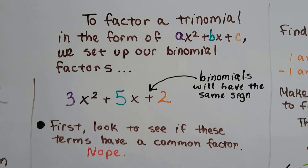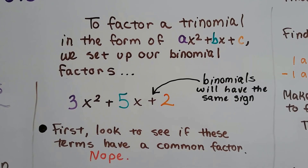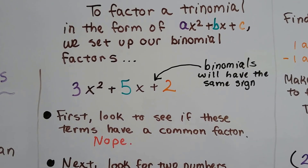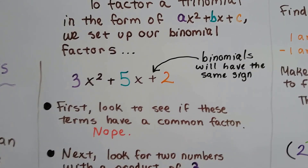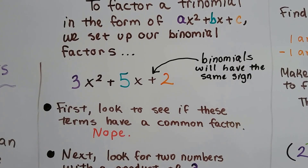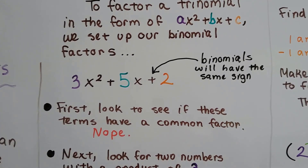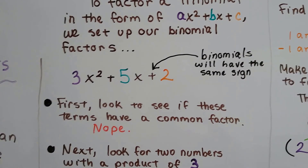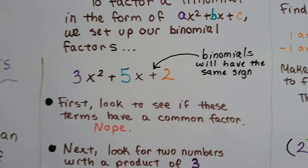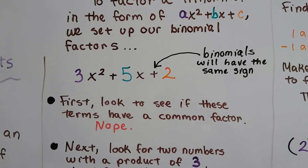To factor a trinomial in the form ax squared plus bx plus c, we set up our binomial factors. There's a plus in front of the constant, and we learned in our previous video that when there's a plus there, the binomial factors are going to have the same sign — we don't know if they'll be positive or negative, just that they'll be the same. The first thing we do is check if the terms have a common factor. Do 3, 5, and 2 have common factors? No.